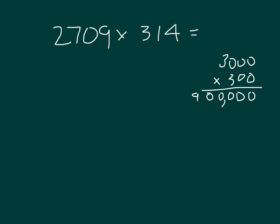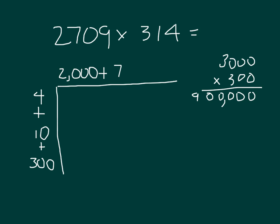Setting up an area model. I'll decompose 314 into its parts, into 4 ones, plus 10, plus 300. Decomposing 2,709 into its parts, we get 2,000, plus 700, plus 9.